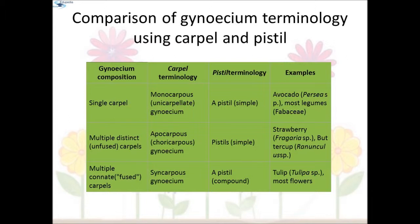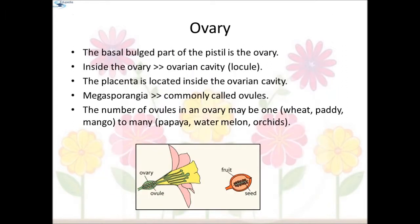Comparison of gynoecium terminology using carpel and pistil: if there is a single carpel it is called monocarpous or unicarpellate gynoecium, the pistil is simple — examples are avocado and most legumes. If there are multiple distinct, unfused carpels, it is apocarpous or polycarpous gynoecium, the pistils are simple — examples are strawberry and buttercup. Multiple fused carpels are called syncarpous gynoecium, the pistil is compound — example is tulip.